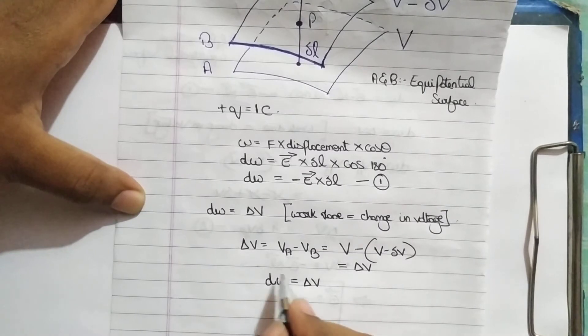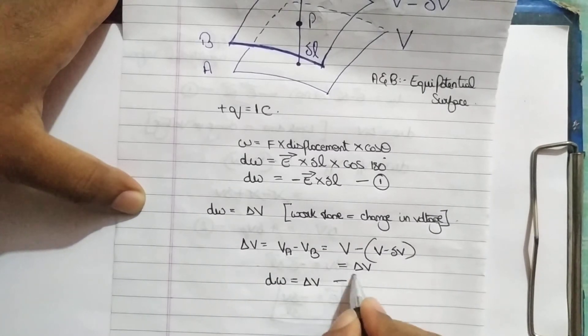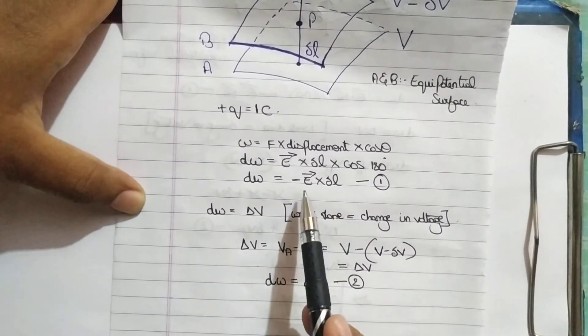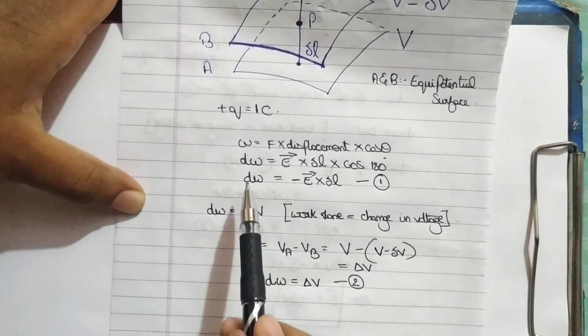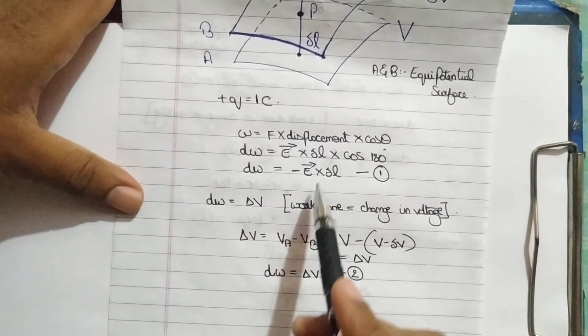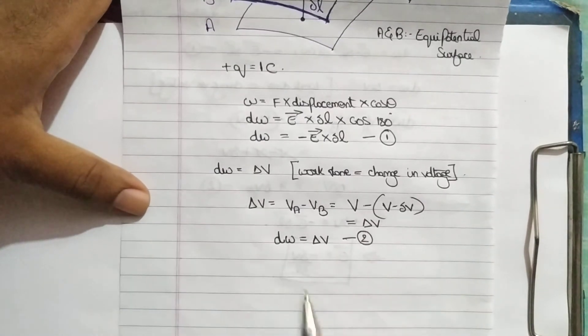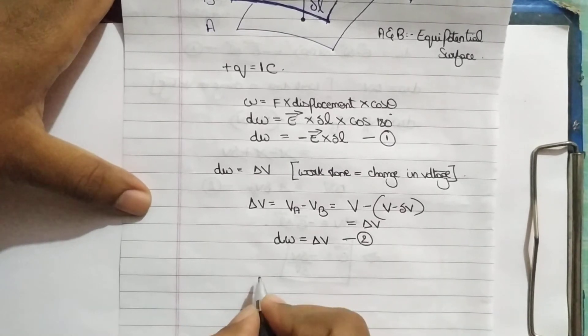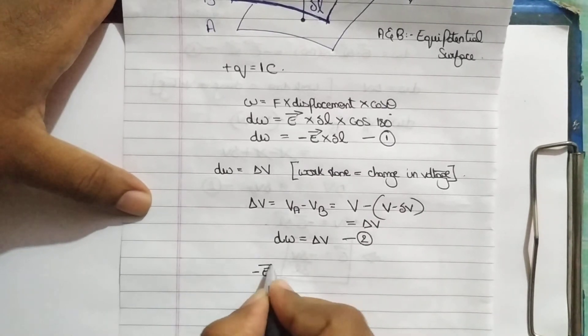Change in potential is nothing but delta V and our delta V is nothing but work done. This is statement 2. And we got work done in both the LHS of equation 1 and equation 2. As a simple basic mathematics, we can equate the RHS. This gives our final equation. That's all students, there is nothing here.